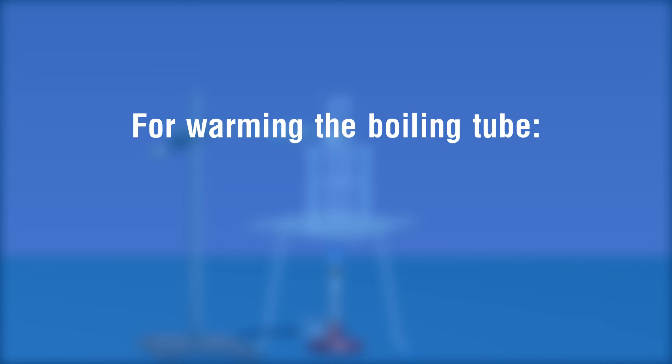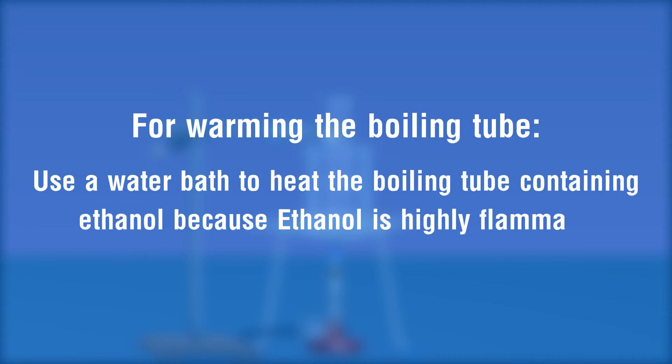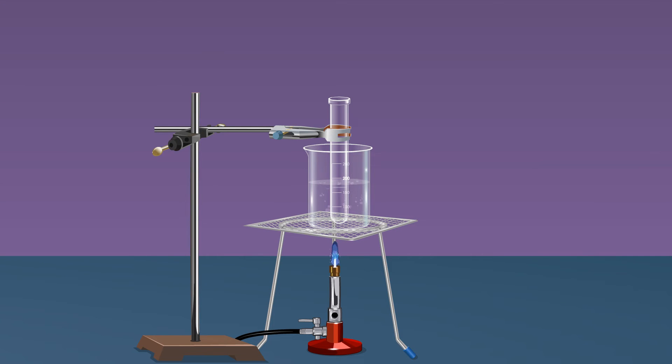For warming the boiling tube, use a water bath to heat the boiling tube containing ethanol because ethanol is highly flammable. The boiling tube containing liquid is uniformly heated or warmed in the water bath at 60 degrees celsius.